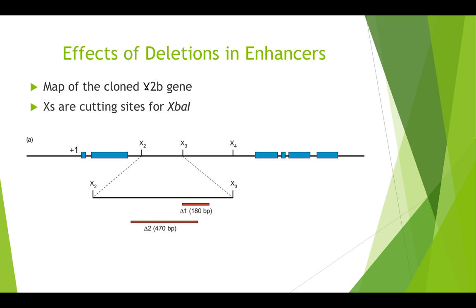This figure is a map of the cloned gamma2b gene, where blue boxes are exons and lines between the blue boxes are introns. X2 to X4 are cutting sites for a specific restriction enzyme. They introduced this gene into mouse plasmacytoma cells that don't normally express this particular gene. The suspected enhancer lay in one of the gene's introns, specifically between X2 and X3.